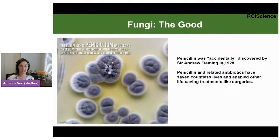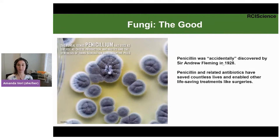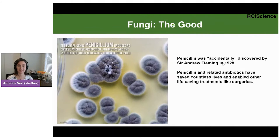When we talk about the diversity of fungi's function — in the spirit of an event called 'the good, the bad, and the ugly' — I wanted to highlight a little of each. First, the good: we need fungi to live on this earth. Without fungi, it's estimated that the earth would be uninhabitable. One example is Penicillium, a fungus that produces penicillin, accidentally discovered in 1928 by Sir Alexander Fleming. Penicillin and related antibiotics have saved countless lives and enabled life-saving surgeries, as people previously died from bacterial infections after operations.